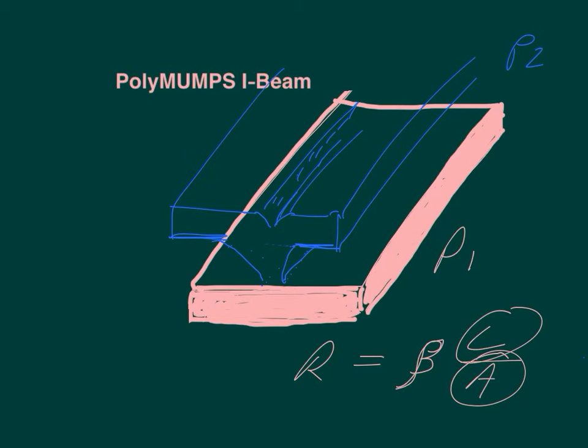So if we make two thin cantilevers and connect them like with an I-beam, we get the benefit of having high resistance, small cross sectional area. And we get two of them on top of each other, plus we get the benefit of the stiffness. So now we've got two PolyMUMPS beams connected with a poly-2, poly-1 via here, resulting in a PolyMUMPS I-beam.